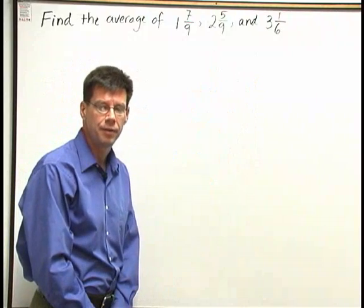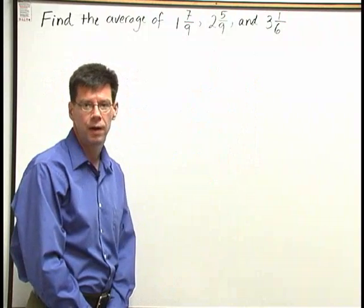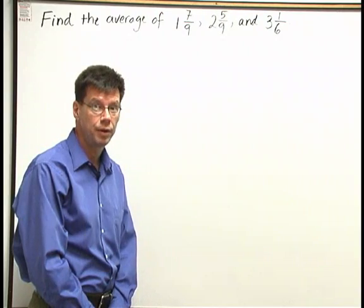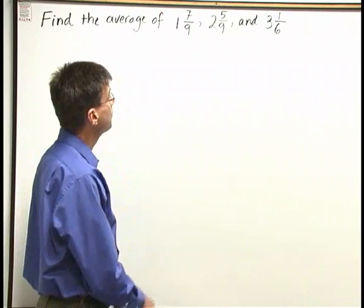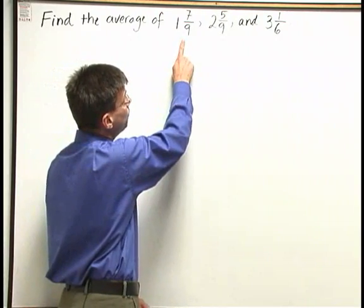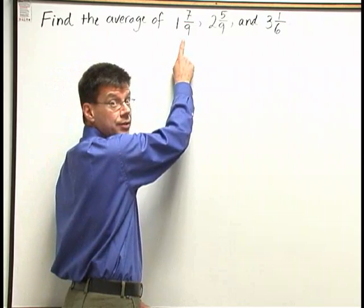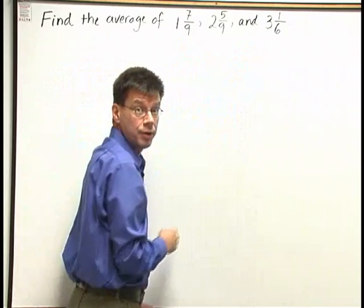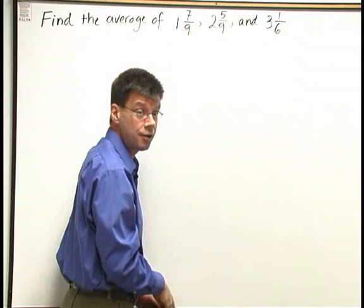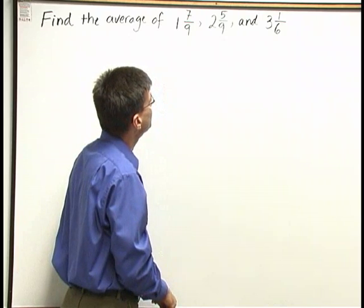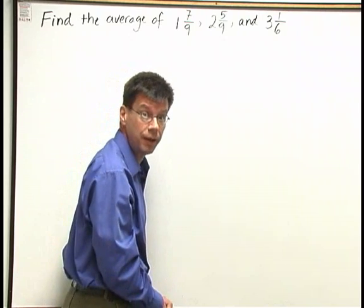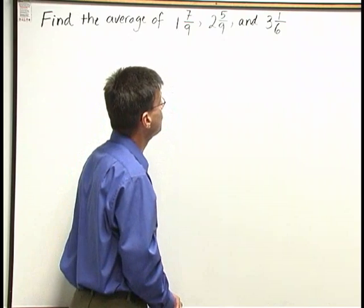Now the average is a measure of the middle of the numbers, and it will always fall somewhere between the smallest one and the largest one. So our average will fall between one and seven-ninths, which is the smallest, and three and one-sixths, which is the largest. But there's really not much more I can guess about the average just by looking at those numbers as written.